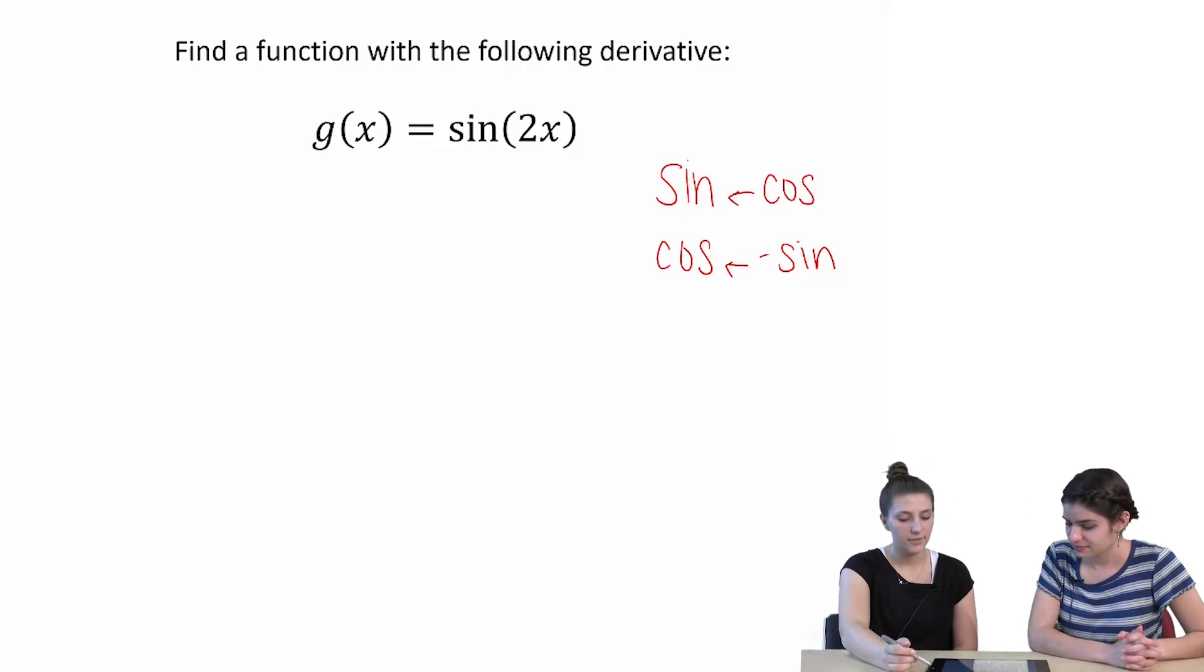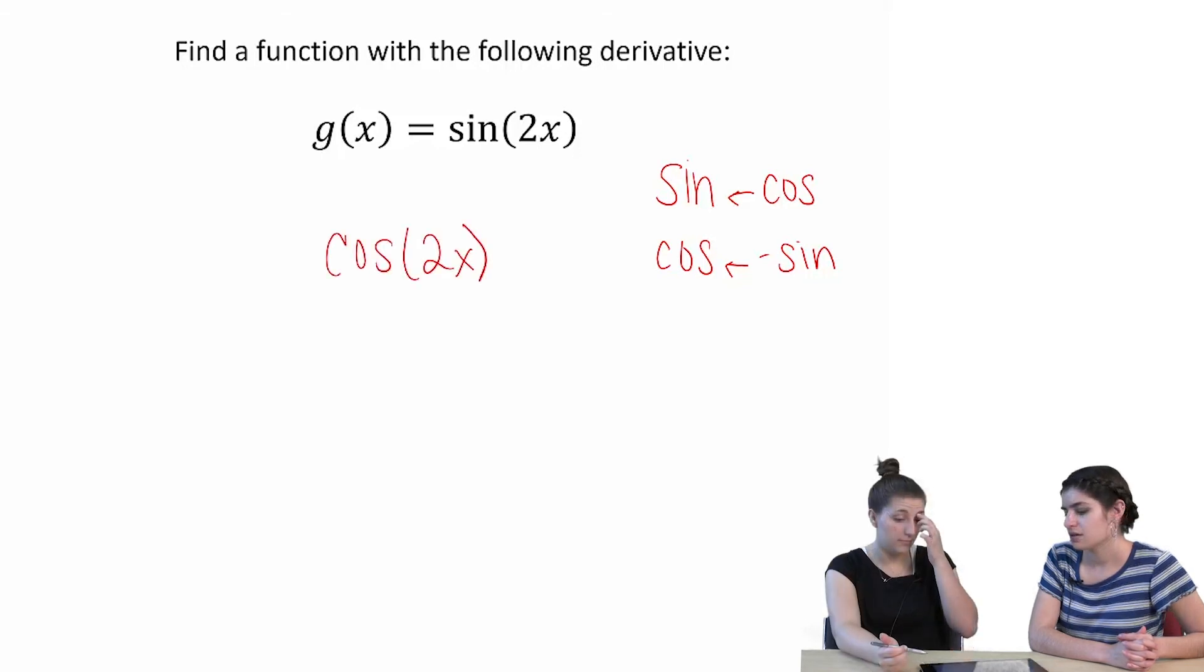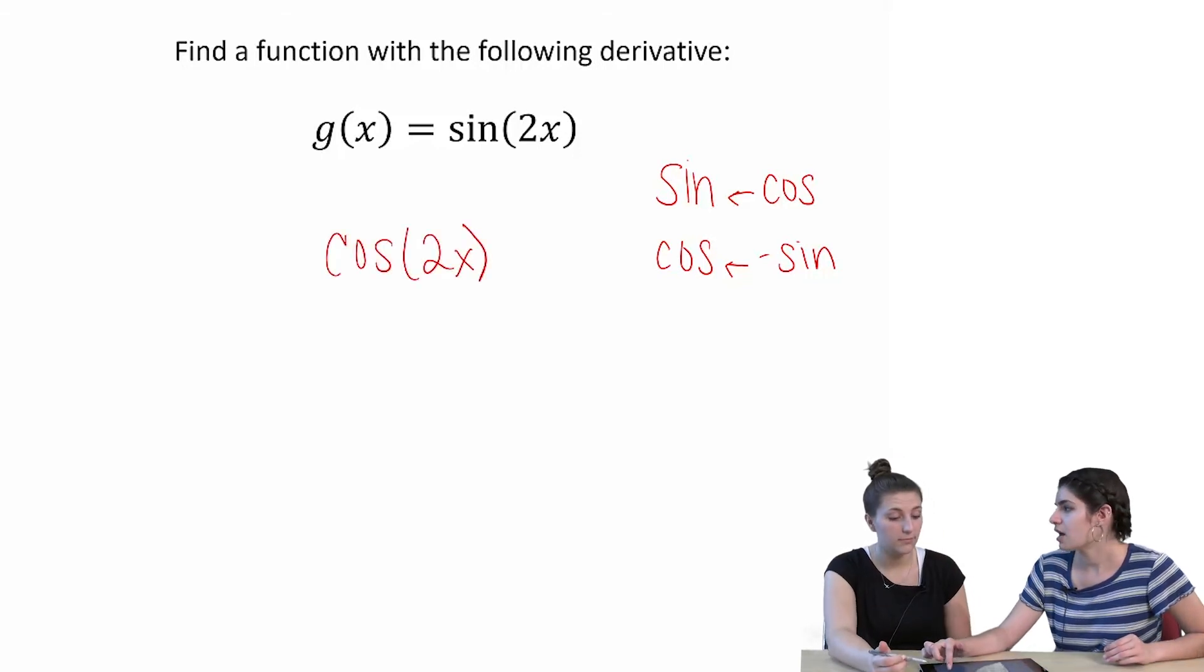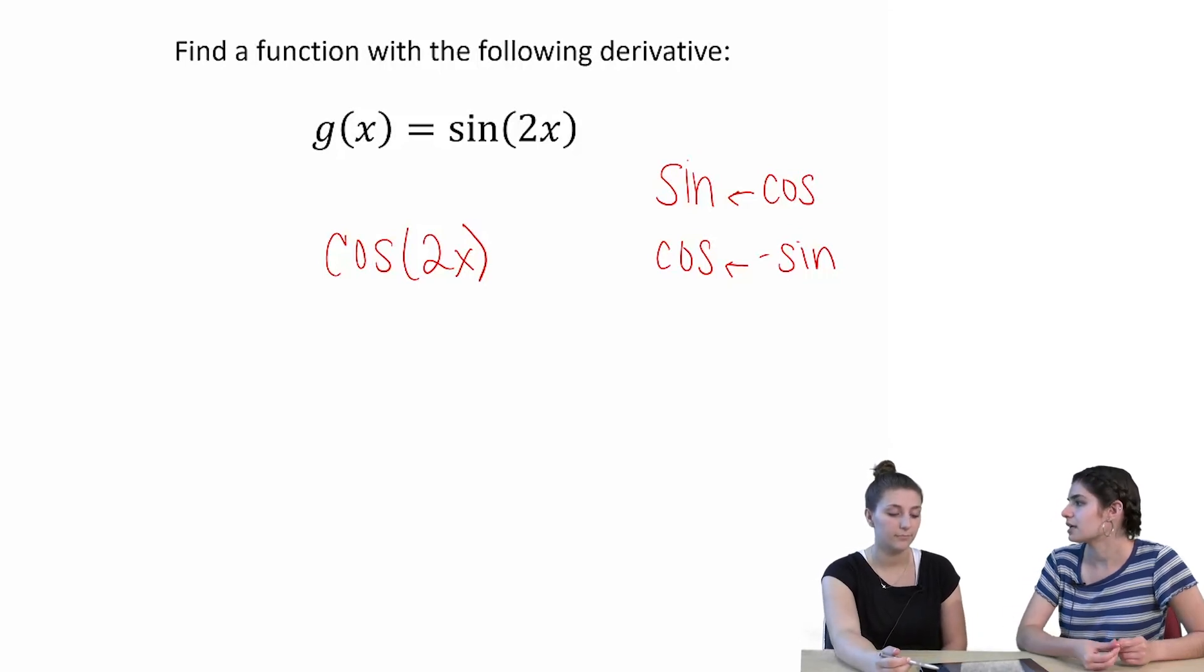So maybe if we're trying to find what made the derivative we can just make these arrows go the other way. Yeah. Sure. Where did sine come from? So sine came from negative sine. Oh wait. Oh. Sine came from cosine. If we start with sine on the right to go to cosine. Oh. You need to have a negative sign at the beginning.